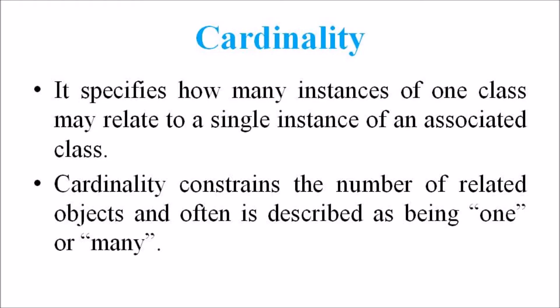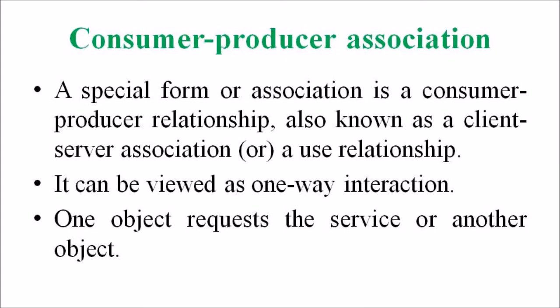For this, let us consider the producer-consumer association. A special form of association is a consumer-producer or a producer-consumer relationship, also known as a client-server association or a use relationship. It can be viewed as a one-way interaction. One object requests the service of another object. The object that makes the request is the consumer or client, and the object that receives the request and provides the service is the producer or server.